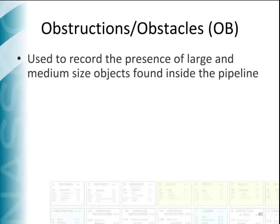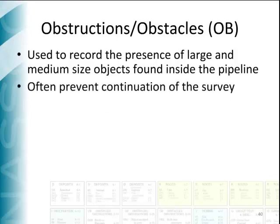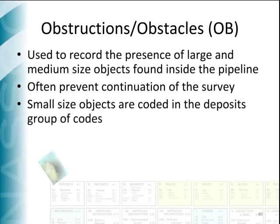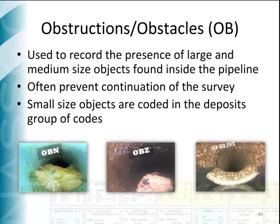This group is used to record large and medium-sized obstacles in relation to the cross-sectional area of the pipe. These types of objects often prevent or limit the continuation of the survey and reduce hydraulic capacity. Note that small-sized objects should be coded in the deposits group. The images presented here show construction debris or OBN, other obstacles or OBZ, and pipe material in the invert OBM.